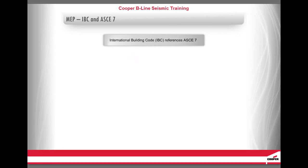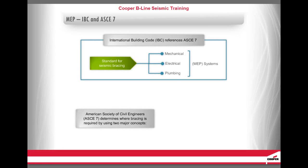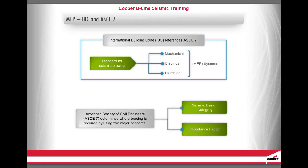The International Building Code, IBC, references ASCE 7 as the standard for seismic bracing of mechanical, electrical, and plumbing systems. The American Society of Civil Engineers ASCE 7 determines where bracing is required by using two major concepts: the seismic design category and the system importance factor. Let's define these two terms.